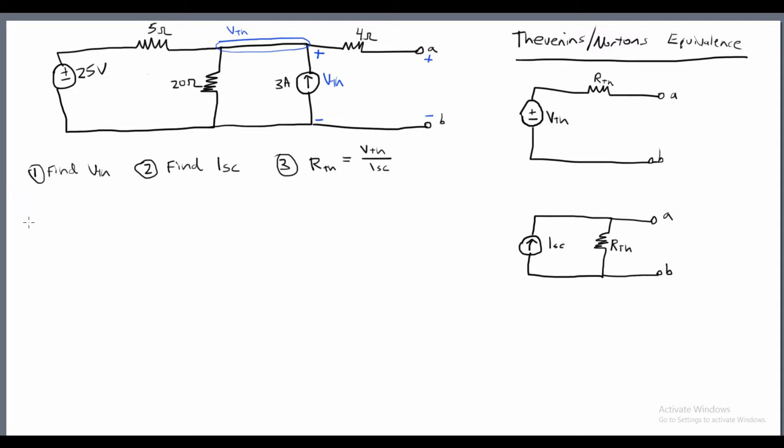So starting off with nodal analysis, we're going to get VTH minus 25 over the 5 ohm resistor. We're going to add that to VTH over the 20 ohm resistor. We have the current come in the opposite direction for the current source, so that's going to be minus 3. As you'll catch on, I really have a habit of doing my nodal analysis where I sum the currents going away from the node. It's just personal preference. It's just what I've gotten used to.